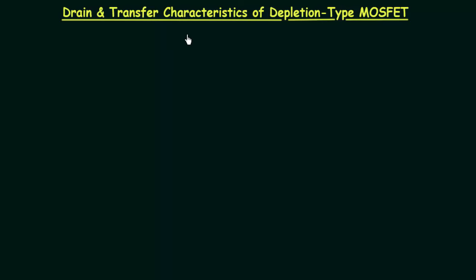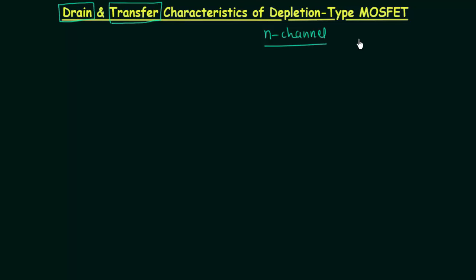In this lecture we will plot two characteristics of N-channel depletion type MOSFET: the drain characteristics and the transfer characteristics. To understand this lecture, you must understand the working of N-channel depletion type MOSFET, which was explained in the previous lecture. I suggest you watch that lecture before continuing.